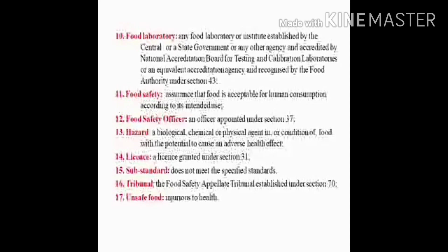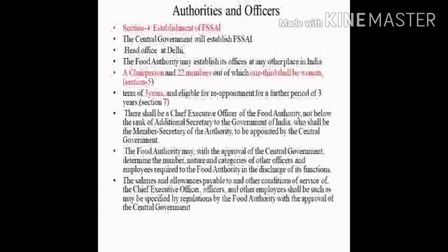Tribunal: Food Safety Appellate Tribunal established under section 70. Unsafe food: injurious to health. Next are the authorities and officers of food safety. The establishment of Food Safety and Standards Authority of India is explained under section 4. The central government established Food Safety and Standards Authority of India, with its headquarters at Delhi. The food authority can establish its offices at any place in India. The authority consists of a chairperson and 22 members, out of which one third should be women, as explained in section 5.